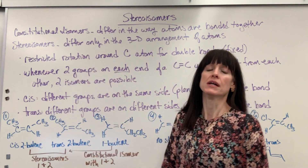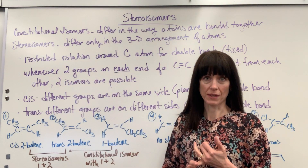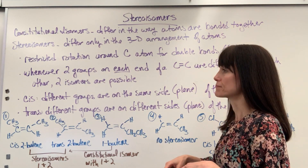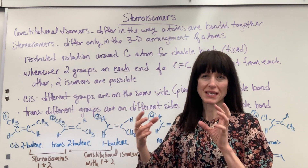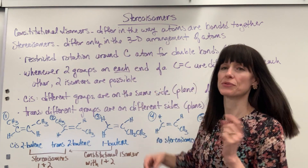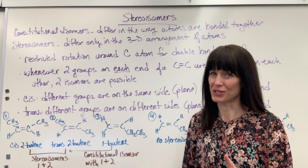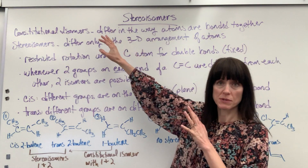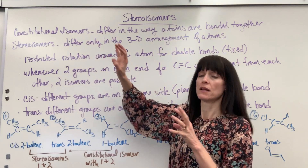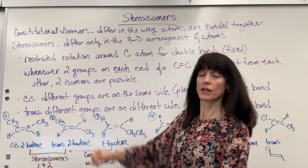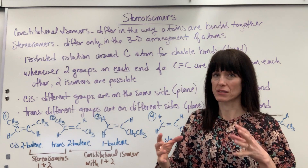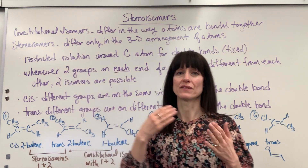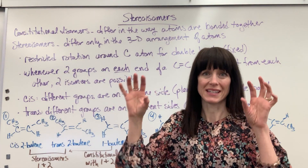A stereoisomer is going to have the same molecular formula and the same overall structures — not that they're bonded necessarily differently. What's different is the 3D arrangement. That's the difference between constitutional isomers, where the elements are bonded completely differently, whereas stereoisomers have a different three-dimensional structure. What's the same for both is that they have the same number of elements in each compound.